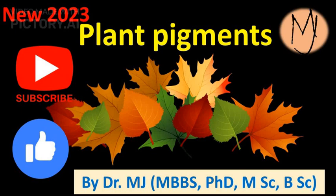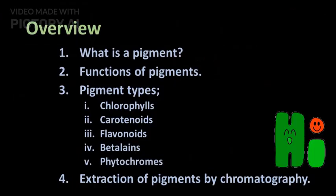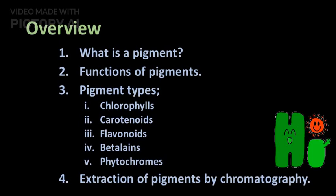Let's look at plant pigments in this video. We're going to learn what is a pigment, functions of pigments, pigment types including chlorophylls, carotenoids, flavonoids, betalains, and phytochromes. Last but not least, pigment extraction by chromatography.